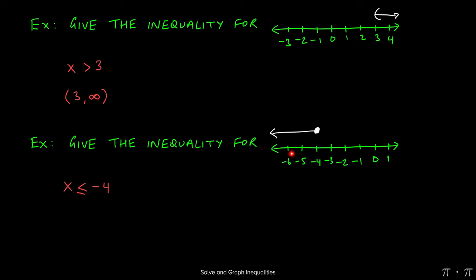would be again looking at it from left to right. The left endpoint is negative infinity, the right endpoint is negative 4. However, because the negative 4 is included, we would put square brackets around negative 4.